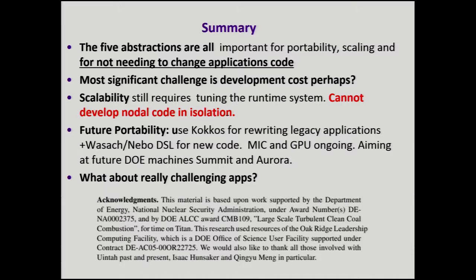What I've shown you is five abstractions, all important for portability, scaling, and not needing to change the application's code. The most significant challenge is the development cost in the runtime system, which still needs tuning. You can't develop nodal code in isolation — if someone says their code is going to scale, frankly we don't really believe you unless you're very lucky. For future portability, we want to use COCOS for rewriting legacy apps and the DSL for generating new code. Our investigations of the Xeon Phi are ongoing. The last point is that there are really even more challenging applications from multi-scale modeling, where we have to combine things at fine scales with things at the continuum scale to get meaningful simulation results. Thank you.